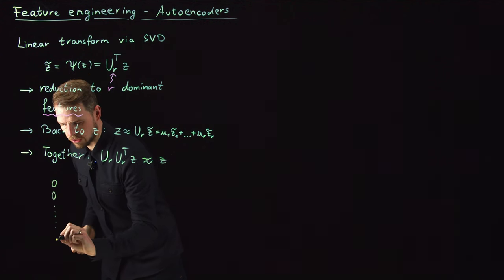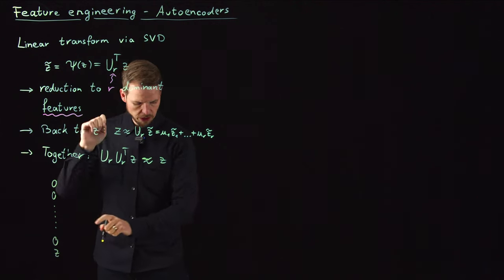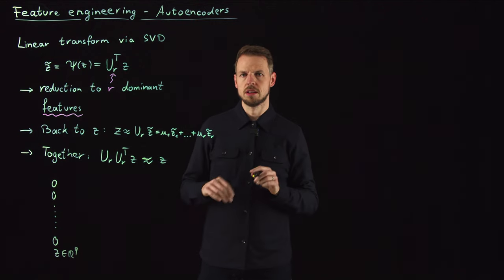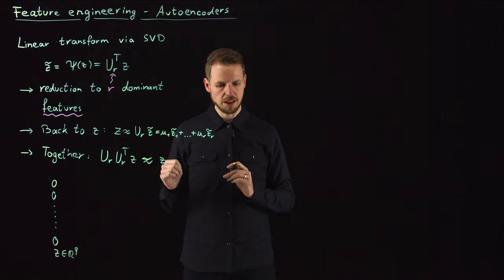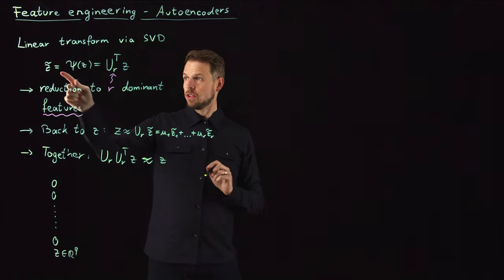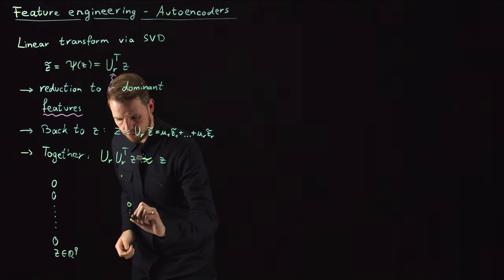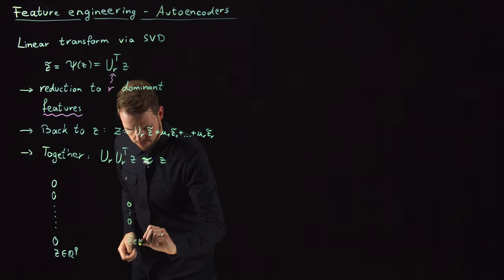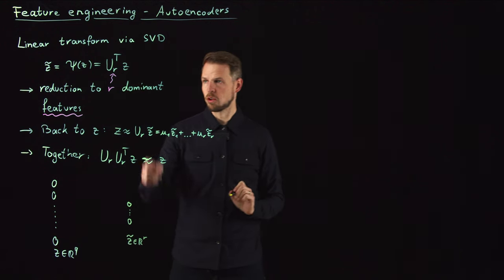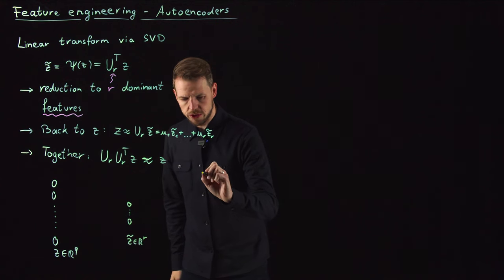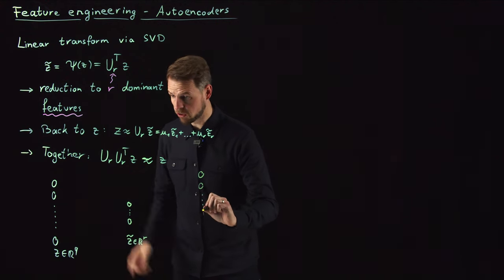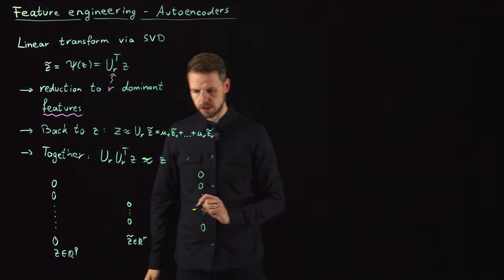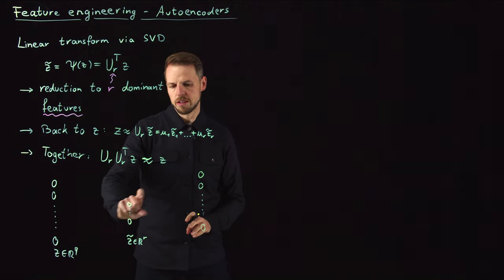Our input vector Z can potentially be very high dimensional. Let's say this is Q real numbers, a very large vector. We have seen this in the sea surface temperature example and in the fluid flow examples. Then we reduce this to our state Z tilde, which has R entries, the number of reduced vectors that we took. Then we go back to the original state, or to an approximation thereof, which has at least the same dimension as our Z vector. So you see, this is a projection onto a lower dimensional space and then we go back.